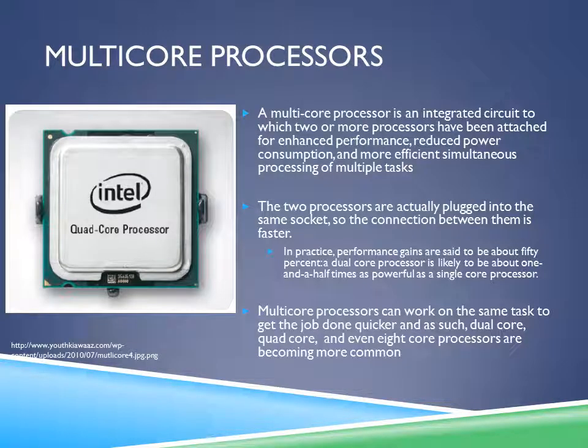A multi-core processor is an integrated circuit to which two or more processors have been attached for enhanced performance, reduced power consumption, and more efficient simultaneous processing of multiple tasks. The two processors are plugged into the same socket, so the connection between them is faster. In practice, performance gains are said to be about 50% — a dual-core processor is likely to be about 1.5 times as powerful as a single-core processor.